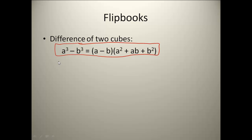Go ahead and put this example in your flipbook: 64x⁶ - 27y³. Now keep in mind you always want to check if you can pull out a common factor. As I look at these, I can't, because 64 and 27 don't have anything in common, and x⁶ and y³ don't either. So what I need to do is break this down into cubes.